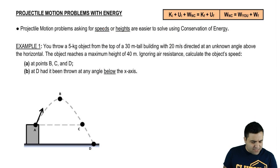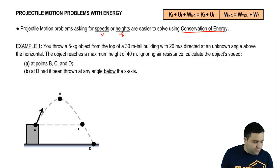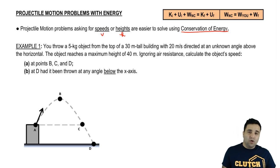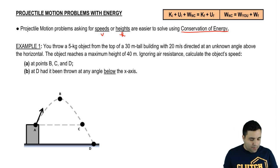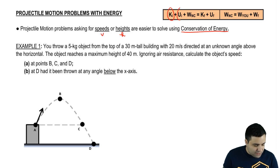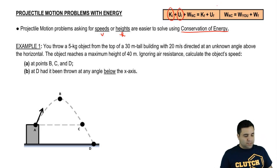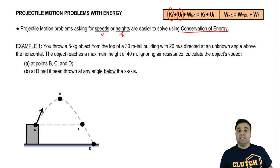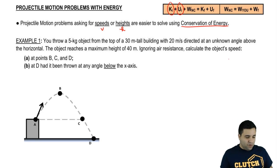Projectile motion problems asking for speeds or heights are sometimes easier to solve using the conservation of energy equation — though not always. We can use energy because speeds relate to kinetic energy and heights relate to potential energy. In some cases this lets us skip picking one of the equations of motion, avoid worrying about positive and negative directions, and avoid decomposing vectors.